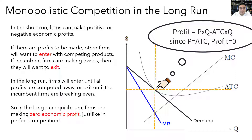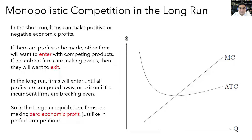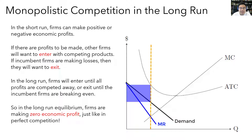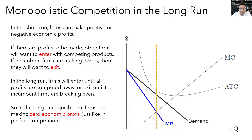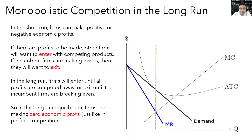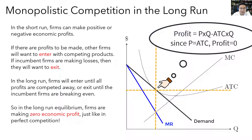Now let's do another example. This time the demand curve is going to be initially like this, and the profit is negative — it's a loss because the ATC is higher than the price. Since it's making negative profits, this firm is planning to exit. But suppose that before it can exit, some other firms like it are also making losses, and they exit first. Then this firm's demand curve is going to be pushed up as its competitors exit, and the losses get a little smaller. After a couple more exits, the demand curve goes up to a point where this incumbent firm is making zero profits, so the firm no longer wants to exit — and it's in long-run equilibrium now.